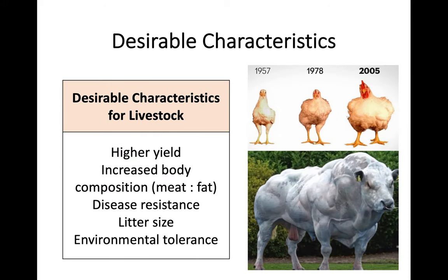It's fairly similar with livestock as well. The characteristics you want your livestock to have include higher yield, increased body composition — so the ratio of meat to fat if you're producing food — disease resistance, and litter size, which is quite important. Ideally you would want your animal to have quite a lot of offspring. And again, there's environmental tolerance — you don't want to have livestock that would die off with a change in temperature or climate.